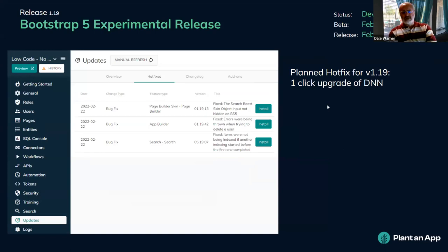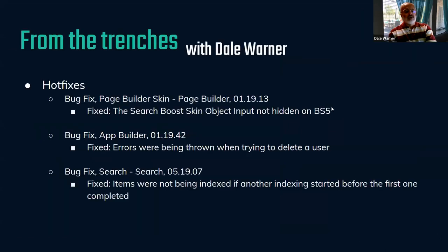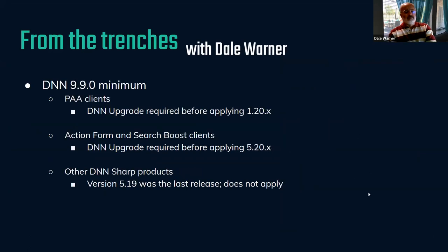One thing I want to call attention to: in version 1.19, we'll be releasing a hotfix. That feature will be the ability to do a one-click upgrade of DNN. In version 1.20, we're moving our DNN minimum to DNN 9.9.0. If you're a current Plant and App customer at version 1.19, you're already at a spot where applying this minimum is going to be very straightforward — you'll be able to one-click upgrade to DNN 9.9.0. We'll still recommend taking appropriate backups, but we're making this process as easy as possible.